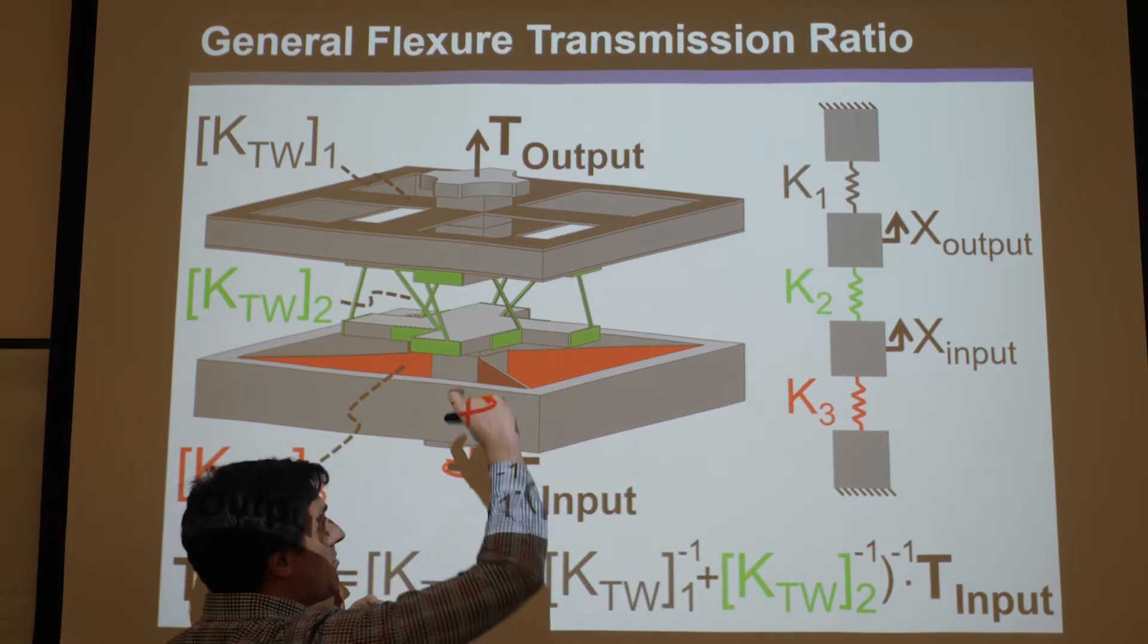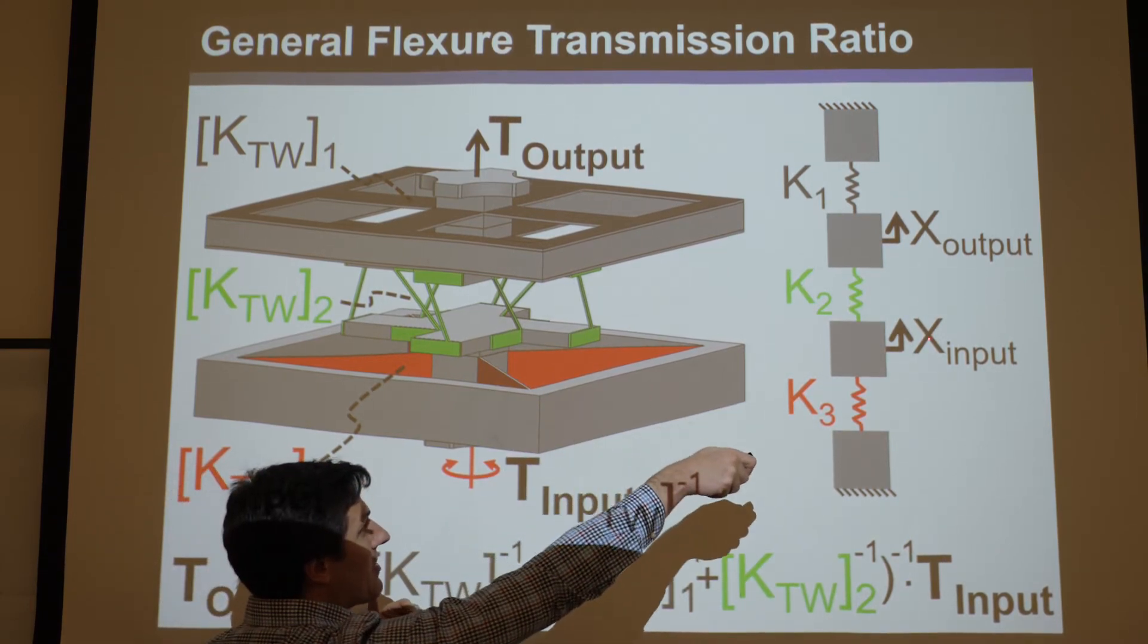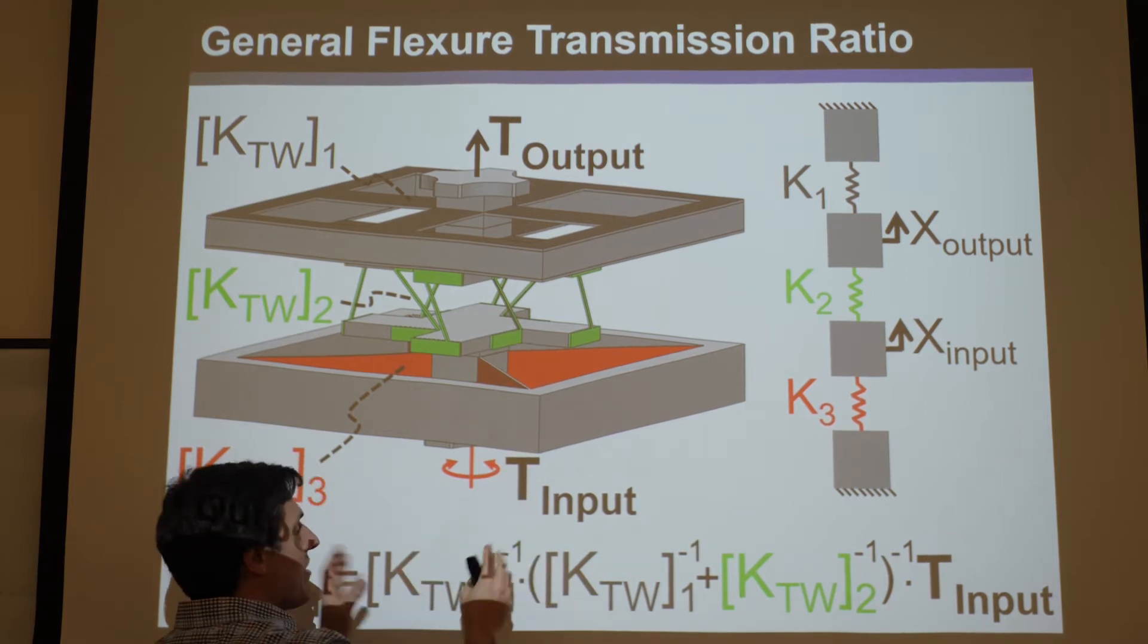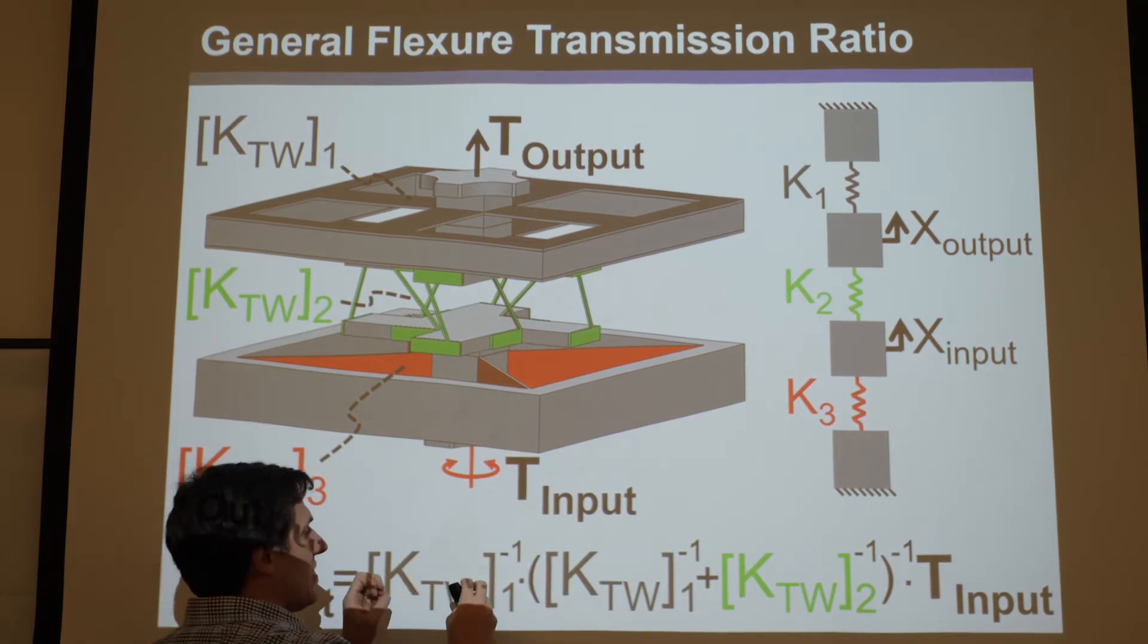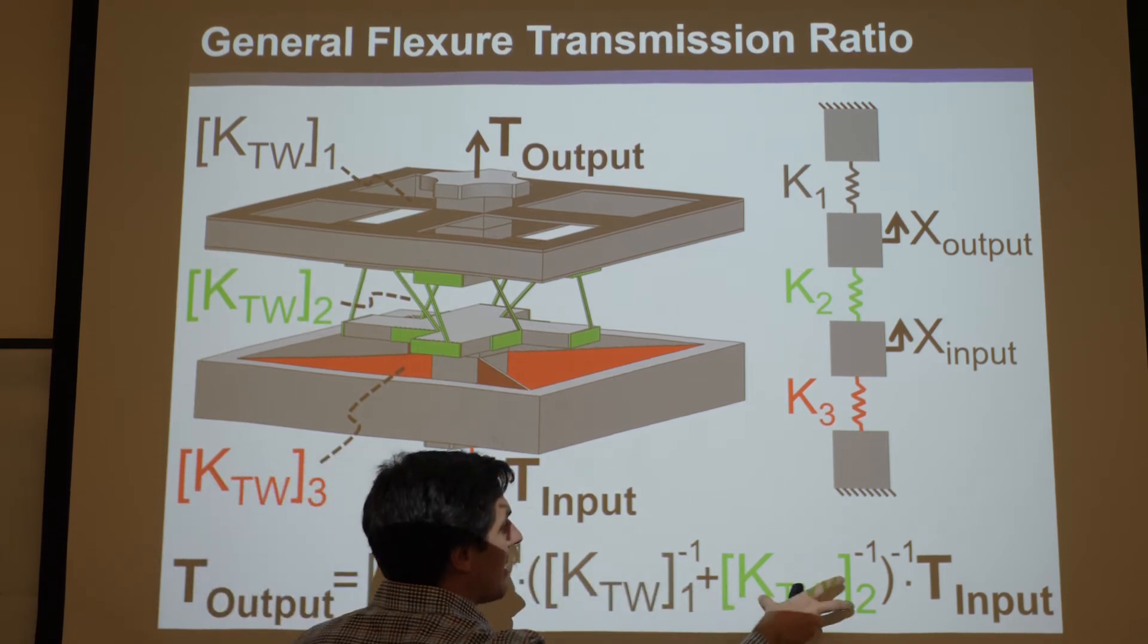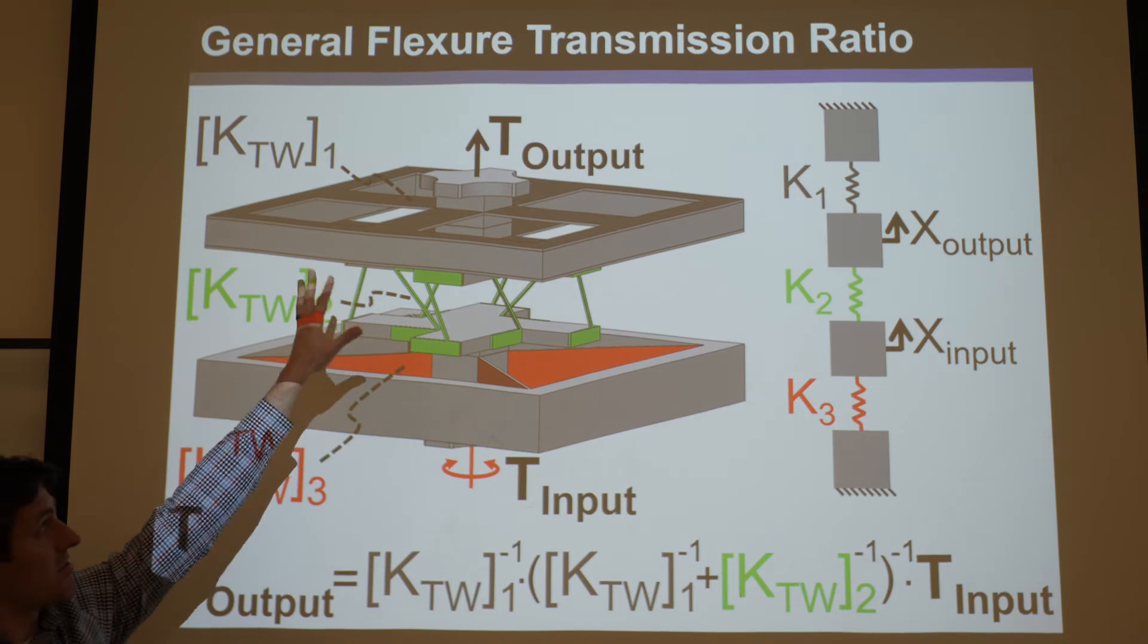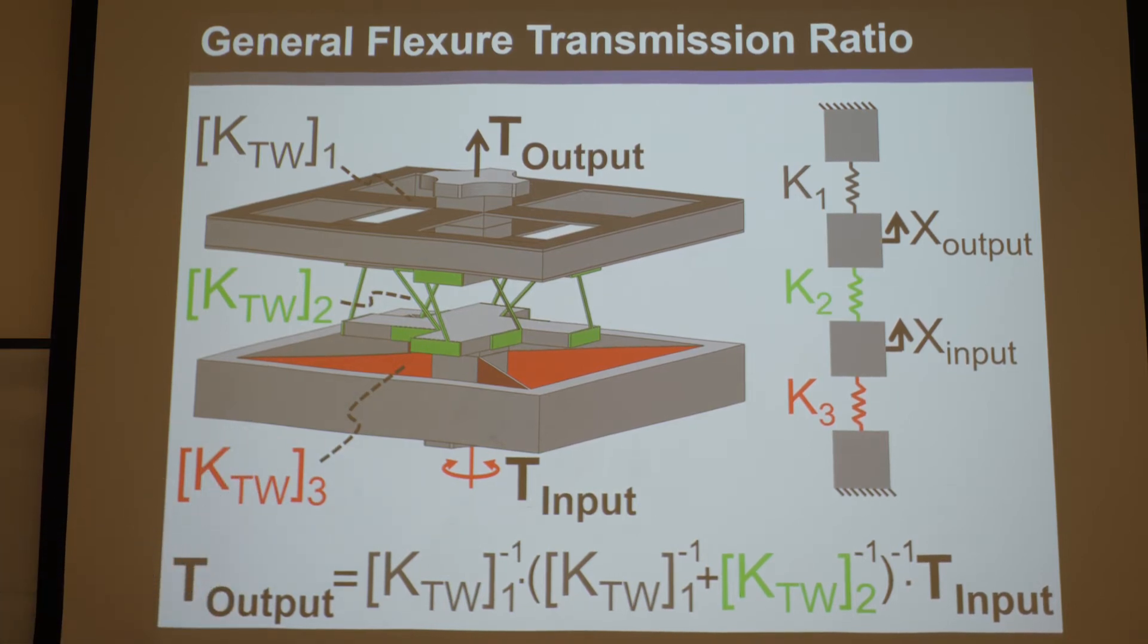But then the other one, if you backdrive it, make this the input and that the output, this will now - K1 won't even matter. You'll put in K3 here, and that's K2, and it'll be totally different because these are totally different flexors, right? But it's still close to the pitch of the screw. It's just not backdrivable. It changes, and that's that.